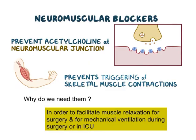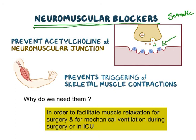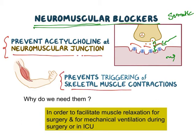Next is the important topic: neuromuscular blockers. This belongs to the somatic nervous system. At the neuromuscular junction, a neuron releases acetylcholine, which acts on the nicotinic receptor and causes muscle contraction. Drugs which block these responses are known as neuromuscular junction (NMJ) blockers. They prevent acetylcholine-triggered skeletal muscle contraction. Their major clinical use is to facilitate muscle relaxation before surgery or for mechanical ventilation during surgery or in the ICU.